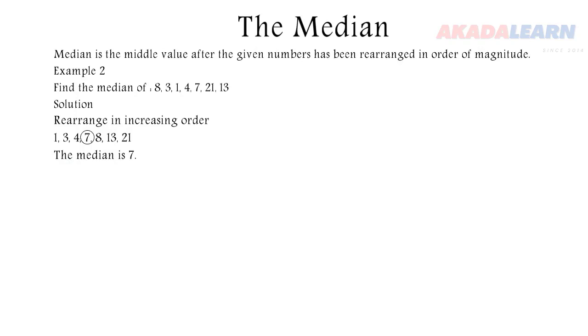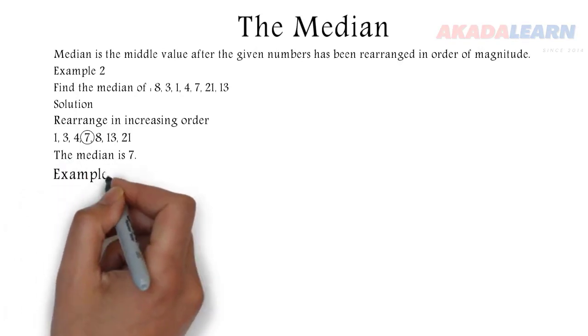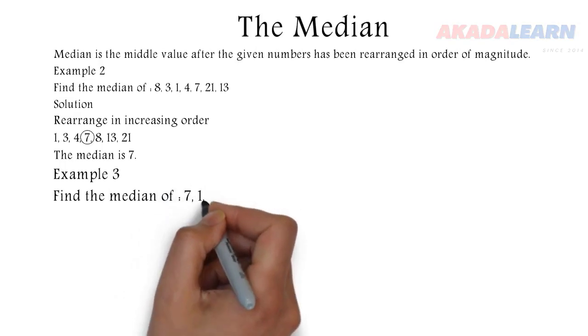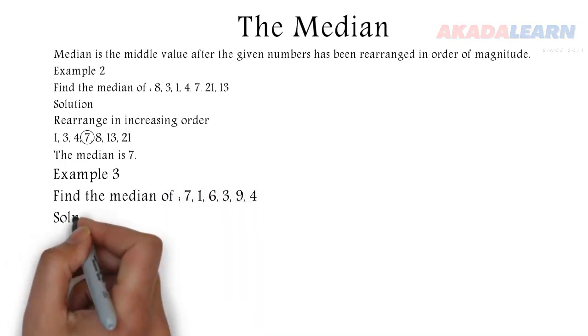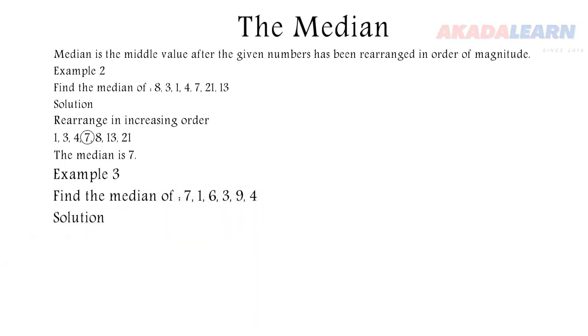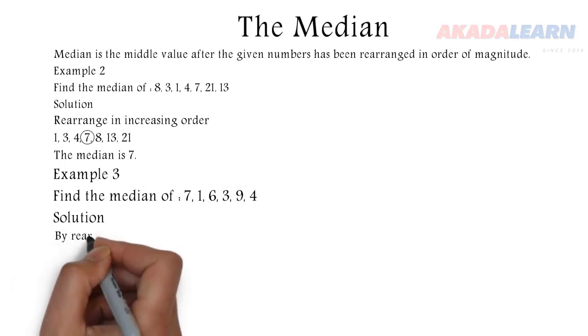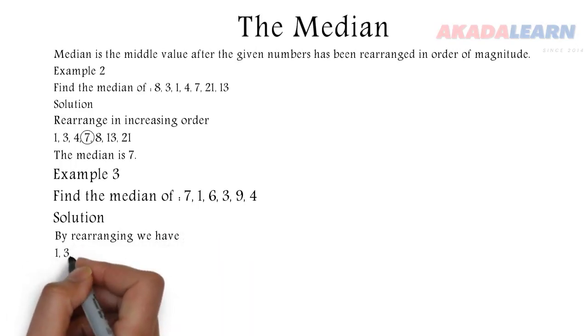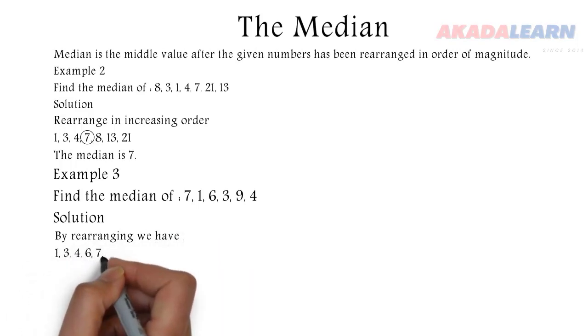Let's see another example: find the median of 7, 1, 6, 3, 9, 4. Again we rearrange, but in this example there is no single number exactly at the middle, so we take the two numbers at the middle, add them, then divide by two.